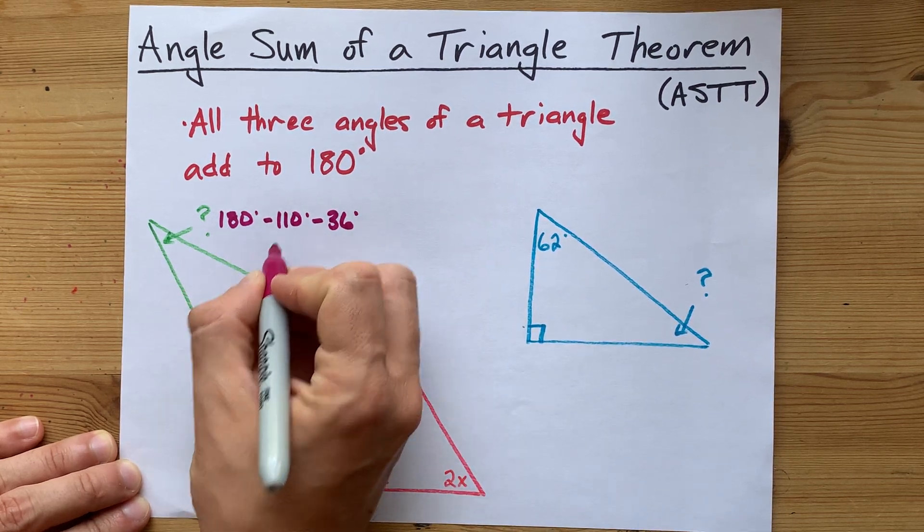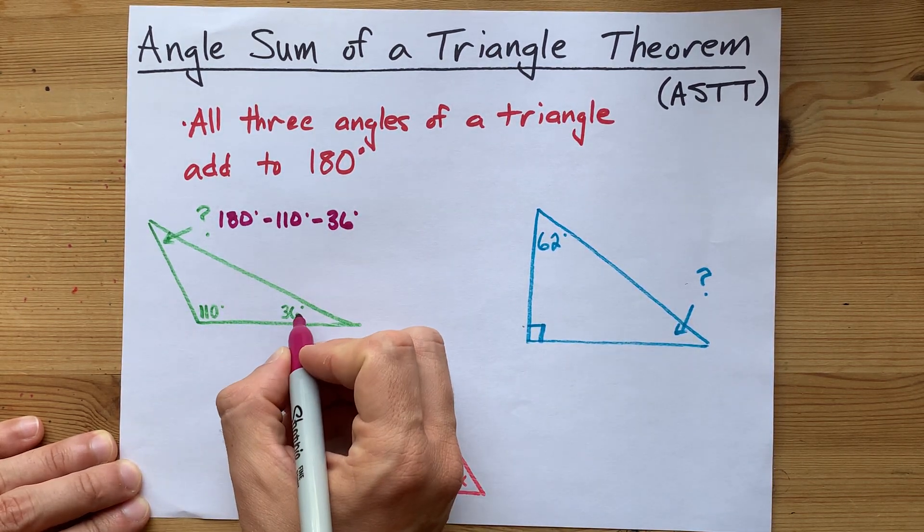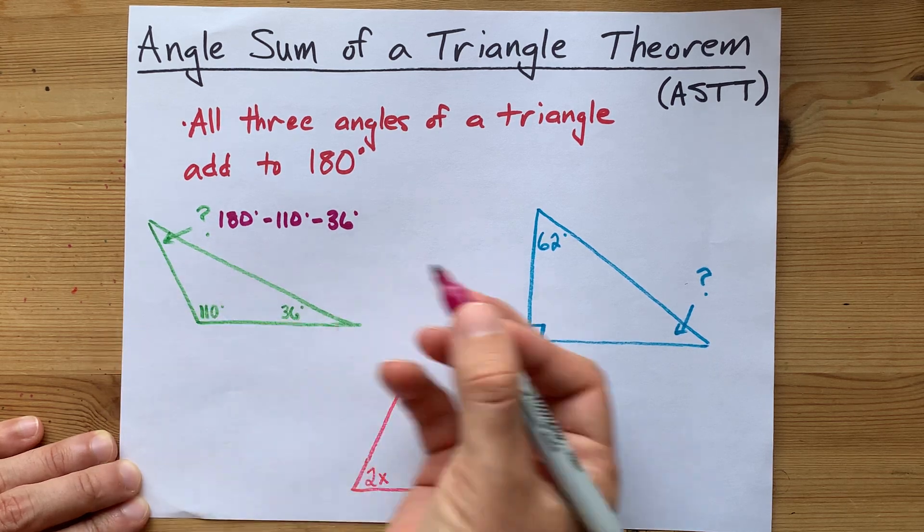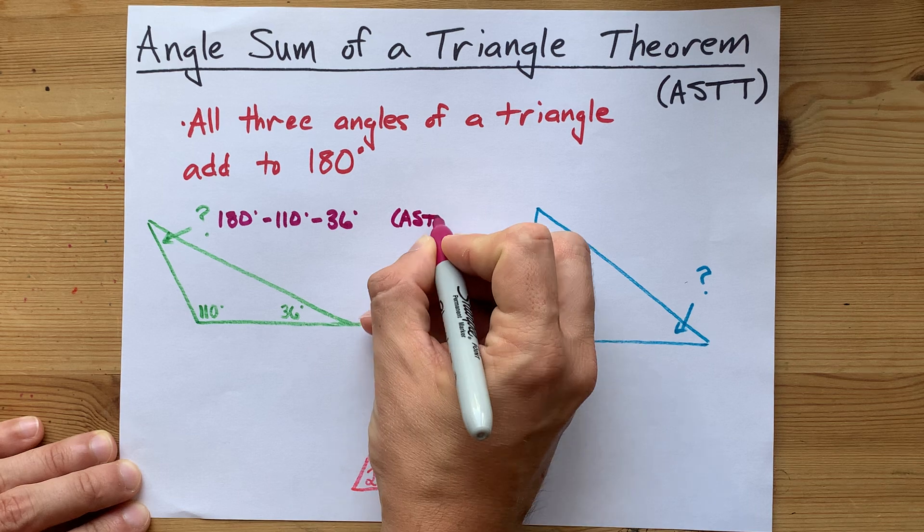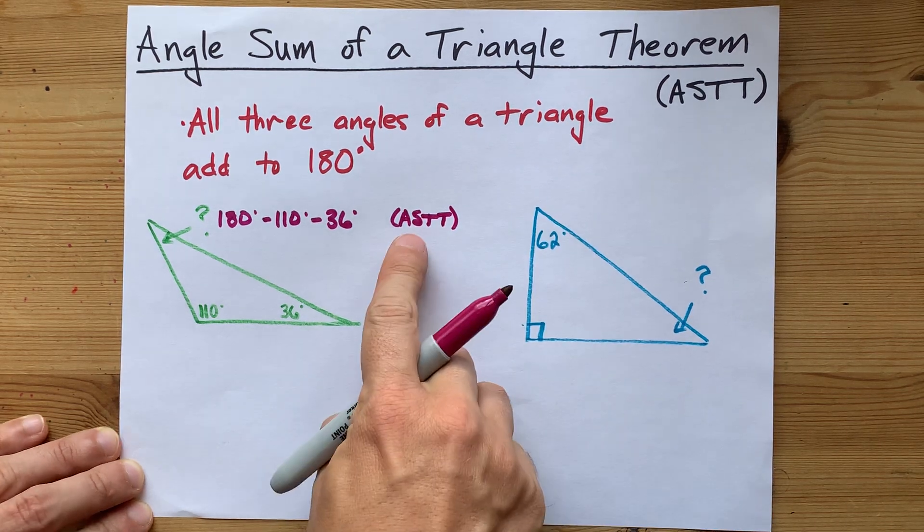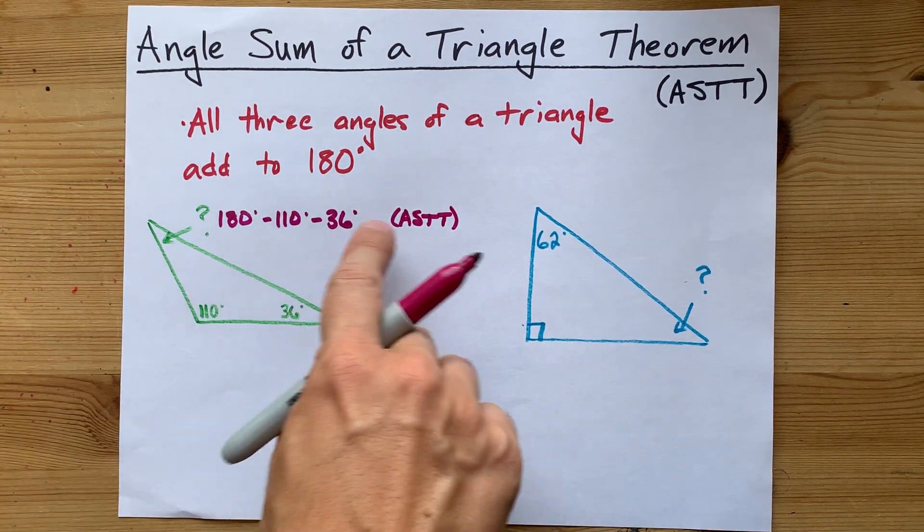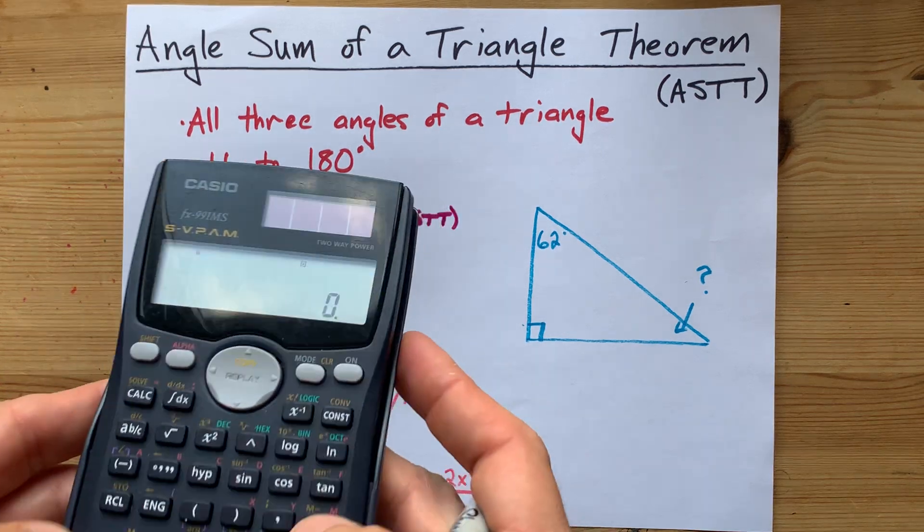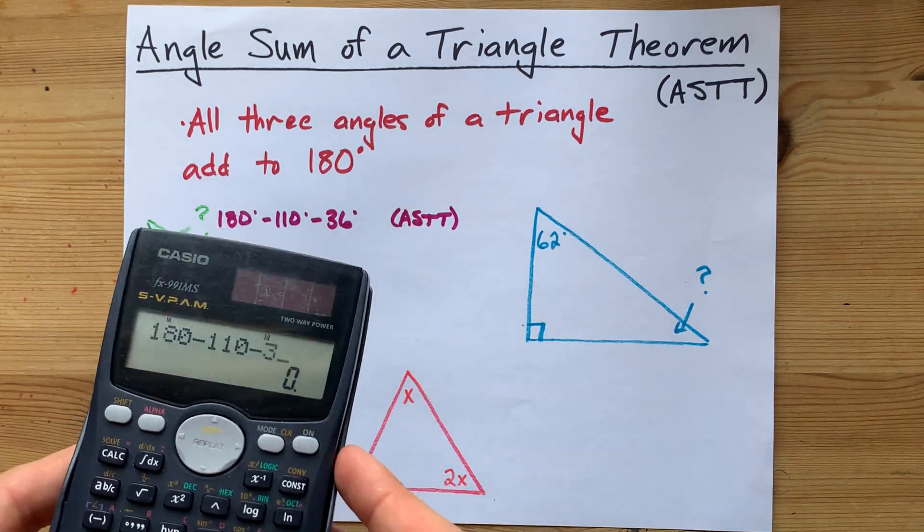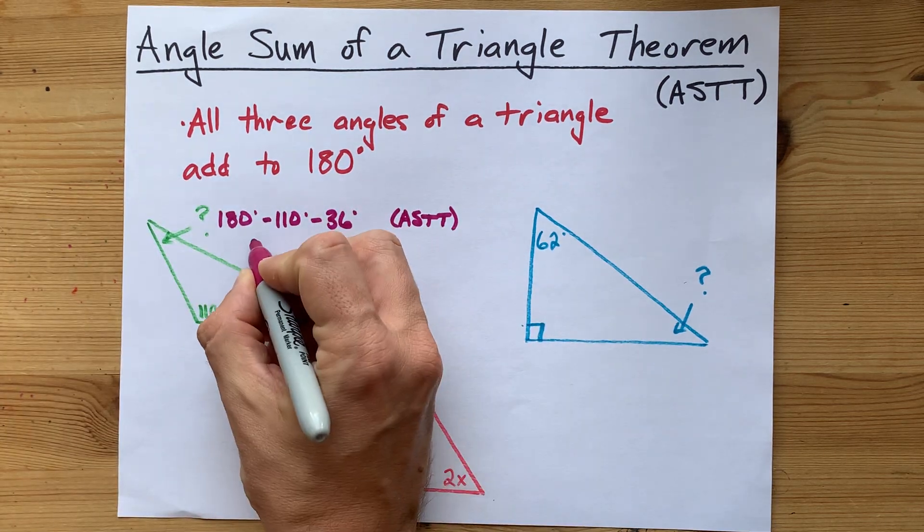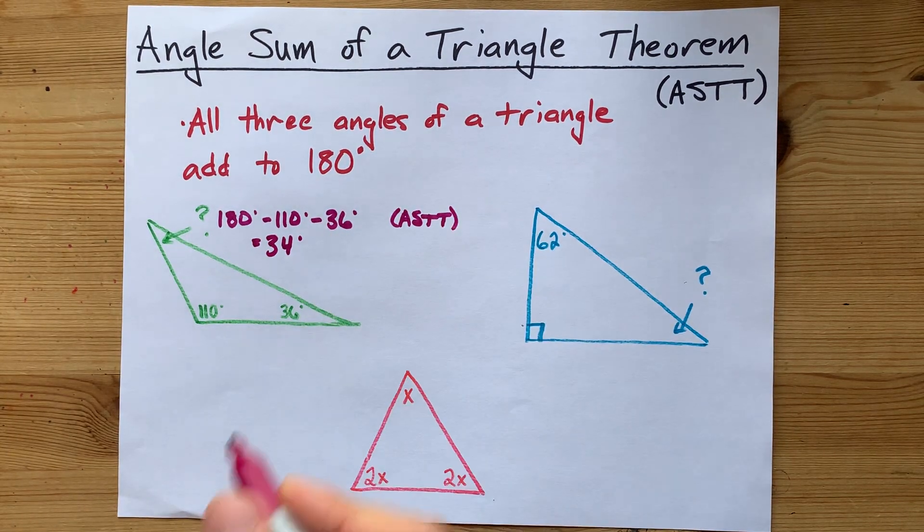That angle is 180 minus 110 minus 36, because all three of them have to add to 180. Lots of teachers will ask you to cite the theorem you're using, so you have to say that you're knowing that by ASTT. Quick calculator work: 180 minus 110 minus 36, that must be a 34 degree angle.